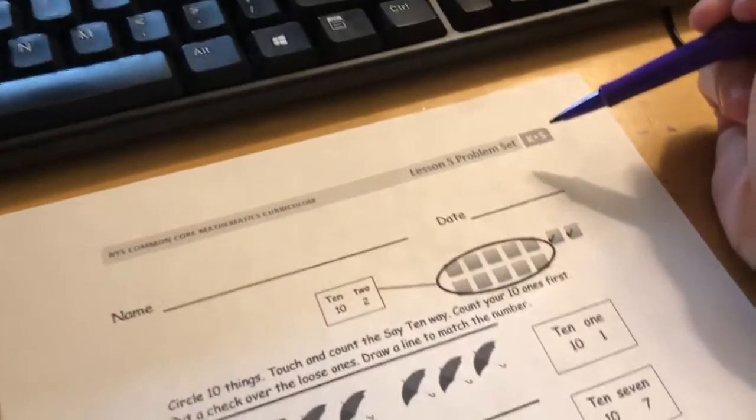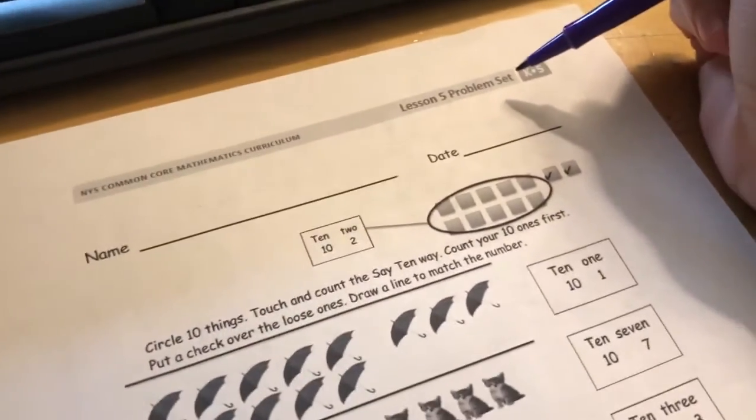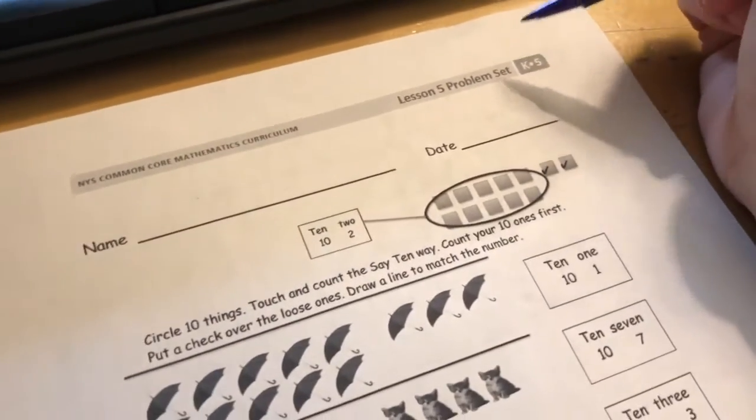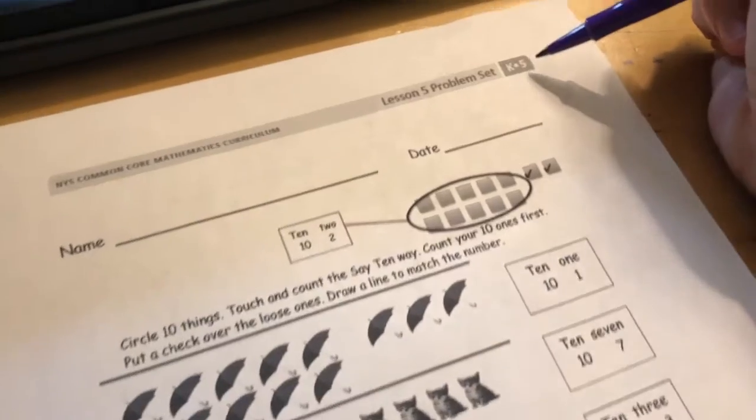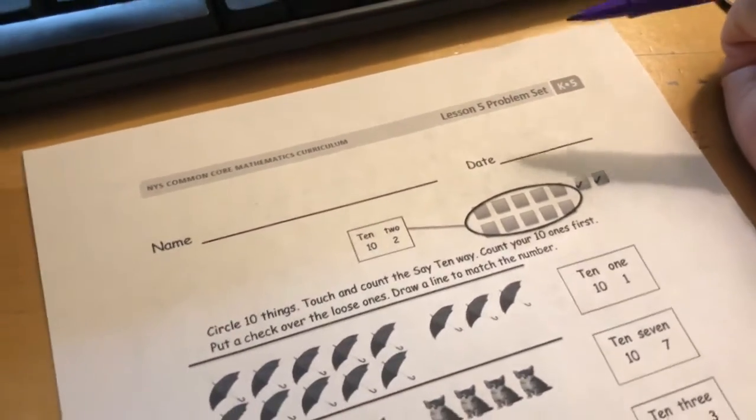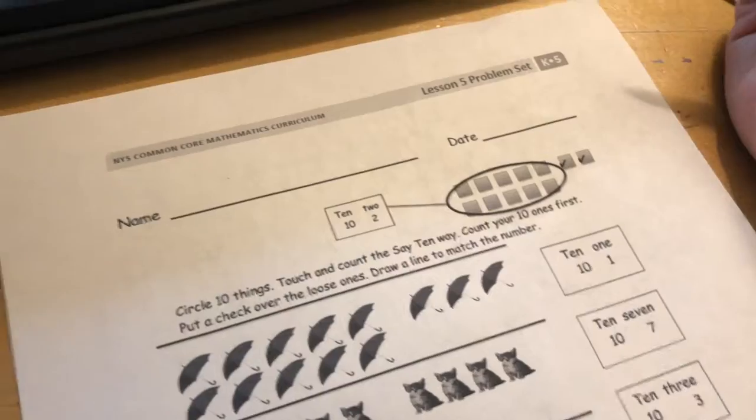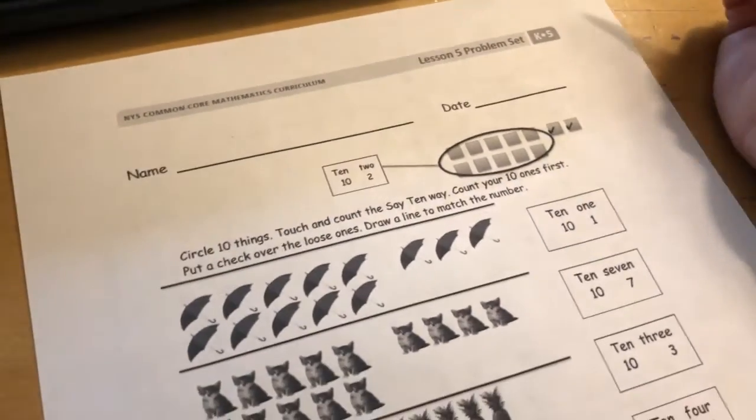Okay, we are back at it ready to go. This is the first problem set of the week of March 30th through April 3rd. So we're still in module 5. We're starting with lesson 5 today. We're going to go through lesson 9 this week. So this is just the first of our problem sets for the week.